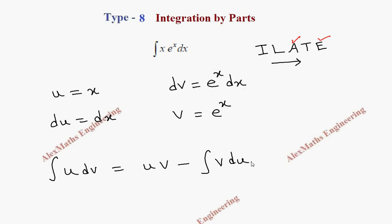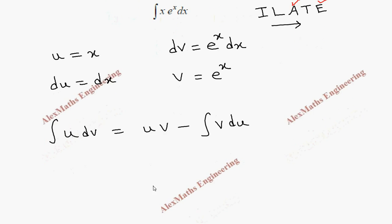Let's substitute: u is x, v is e^x, minus integral v is e^x and du is dx.